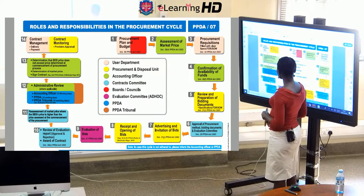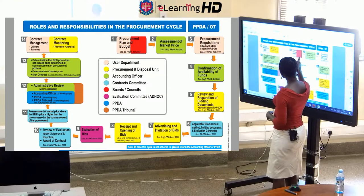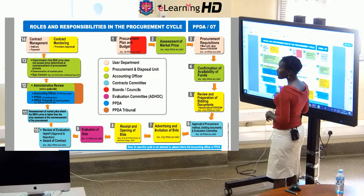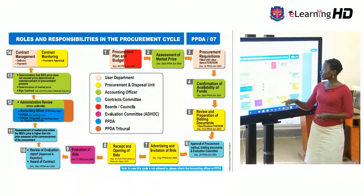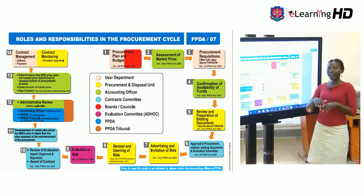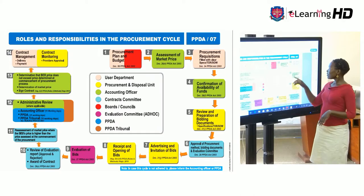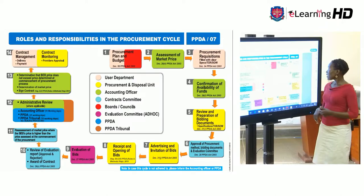We start with procurement plan and budgeting, and that is a must to do. All user departments and the boards and councils, who are also user departments, must carry out procurement planning and budgeting. Then we need to make an assessment of the market price — what is happening out there — because we do not want suppliers to give you a very high or very low price.